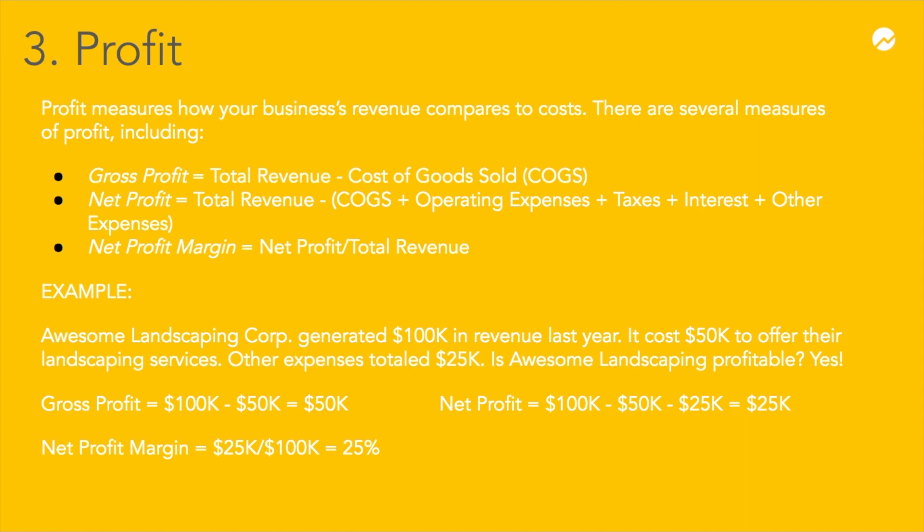Finally, net profit margin takes your net profit and divides it by total revenue. Net profit margin differs from industry to industry and is a good indicator of how your company is performing relative to competitors.